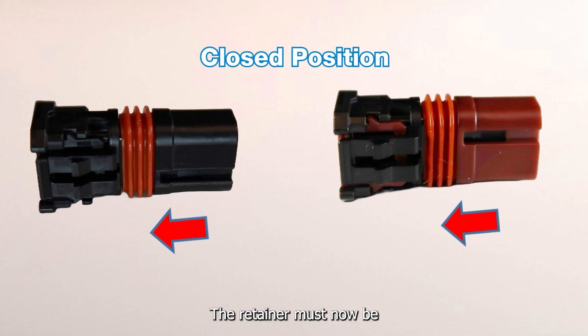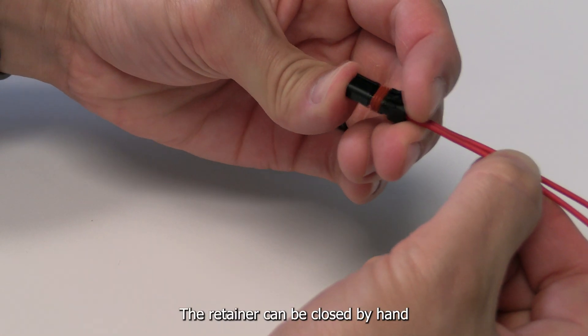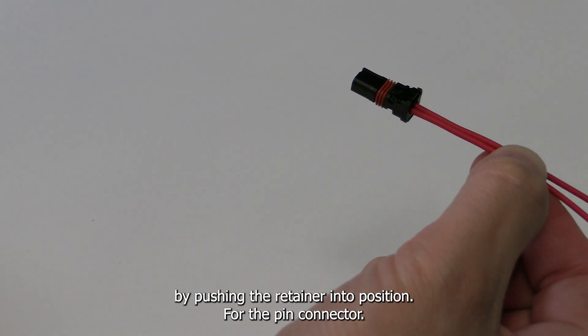The retainer must now be closed to complete the assembly process. For the socket connector, the retainer can be closed by hand by pushing the retainer into position.